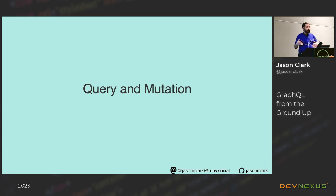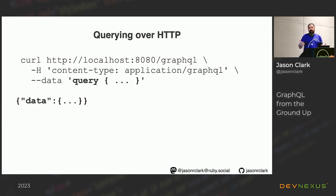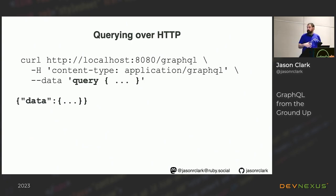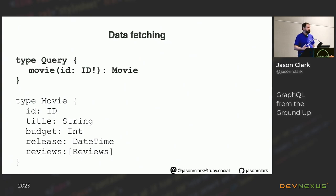With these pieces we can define an object structure and map how someone would interact with our service. How would you query and mutate data through this GraphQL service? Being a replacement for REST in some senses, it's unsurprising that GraphQL works over HTTP. The standard way of exposing it is to have an endpoint — generally slash GraphQL. You post your query body to that, and the response you get back is JSON data. There is a root type called Query, which is your entry point into the GraphQL schema.